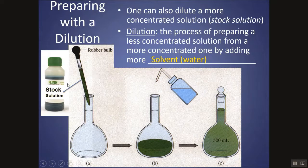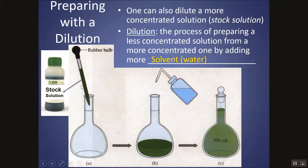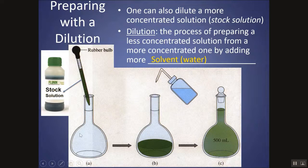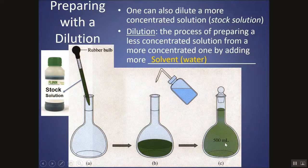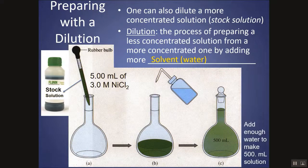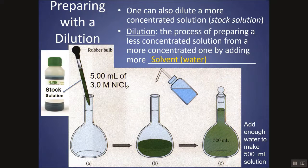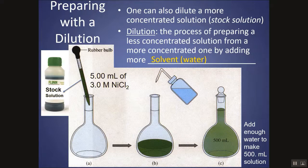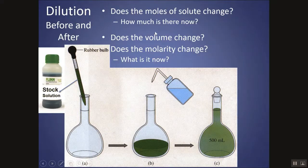So you would measure out some volume of the stock solution into a volumetric flask, let's say, and then you add more water to dilute it down to the lower concentration that you need. So the stock solution has the higher molarity, the solution that you're creating would have the lower molarity, because you're adding water to dilute it down.